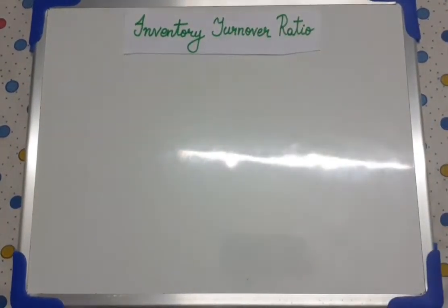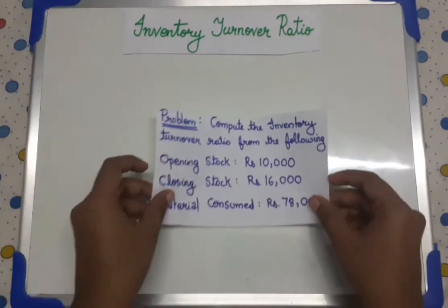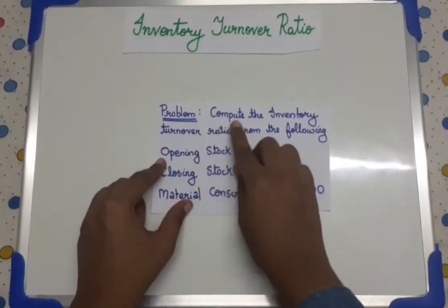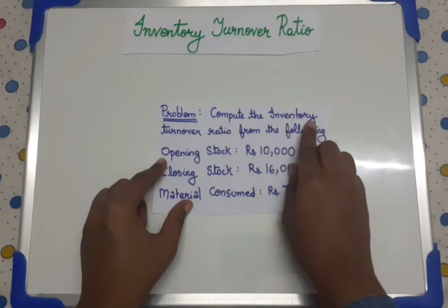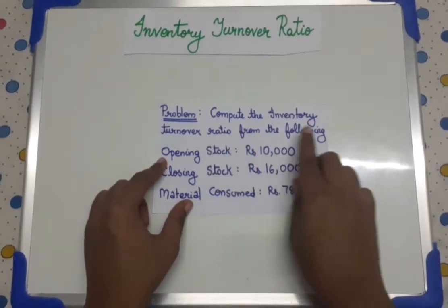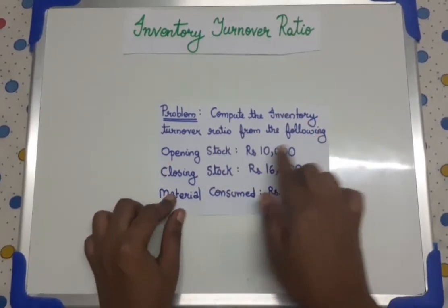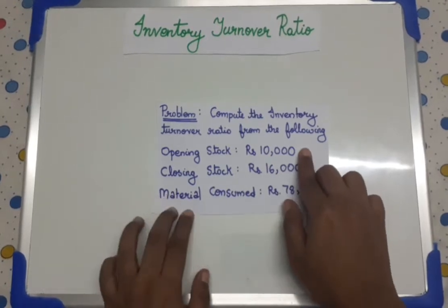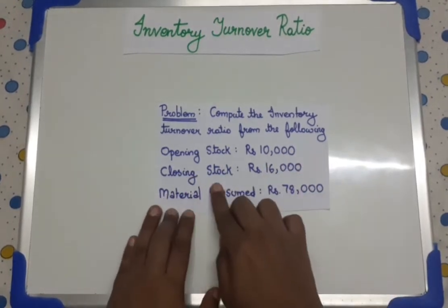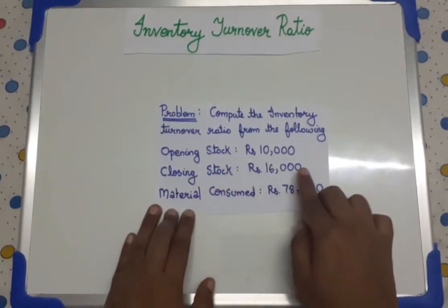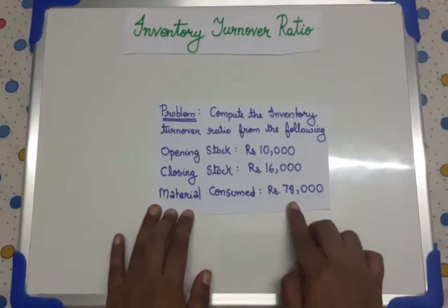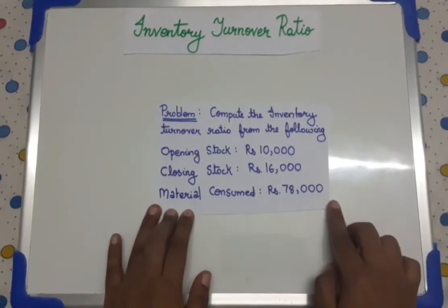The first question is — the question is also given in the description. Compute the inventory turnover ratio from the following: opening stock is equal to Rs 10,000, closing stock is equal to Rs 16,000, and the material consumed is Rs 78,000.